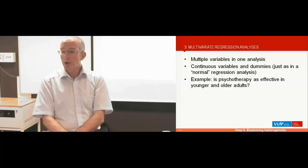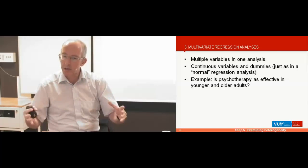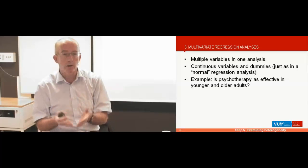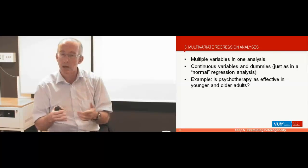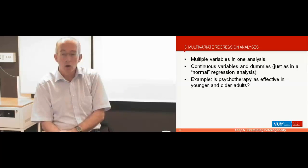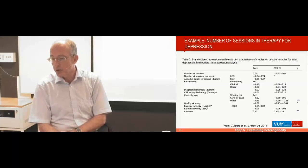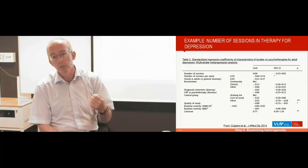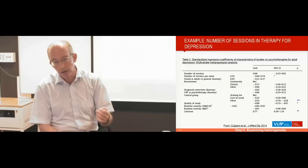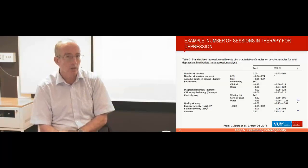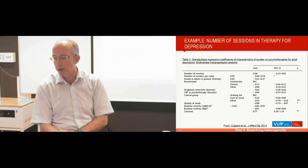You can also do multivariate meta-regression analysis, entering all characteristics of those studies into one large multivariate model. You can use continuous outcomes and dummy variables, just as in a normal non-meta-analytic regression analysis. Here is an example from a meta-analysis we did on psychotherapy for older adults, looking at the association between effect size and a series of characteristics of those trials — this shows a normal output of such a multivariate analysis.